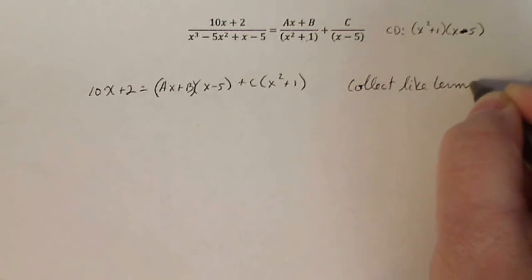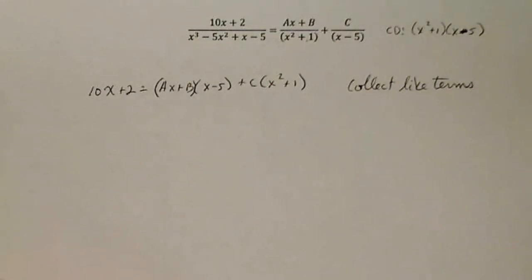Now, like terms, that means combining coefficients of terms that have the same variable and power. So the same x squared, same x, same anything like that, same constant. So that's what I'm going to do.